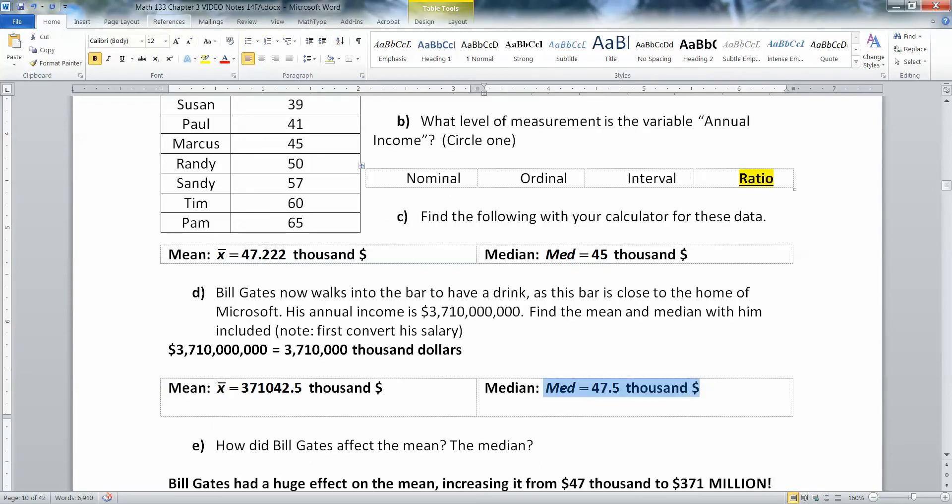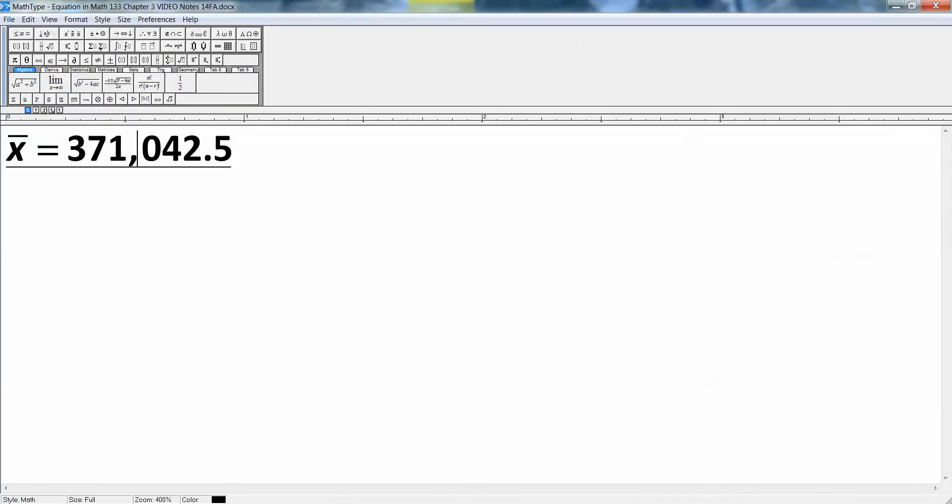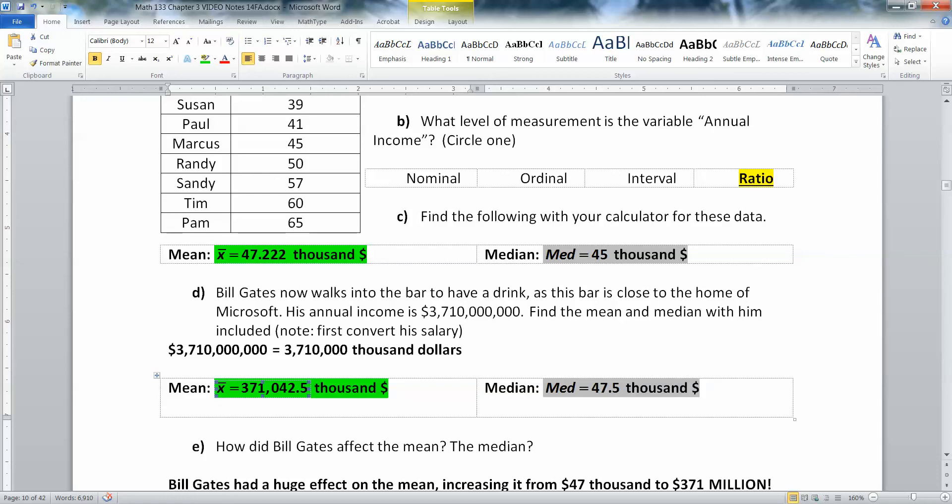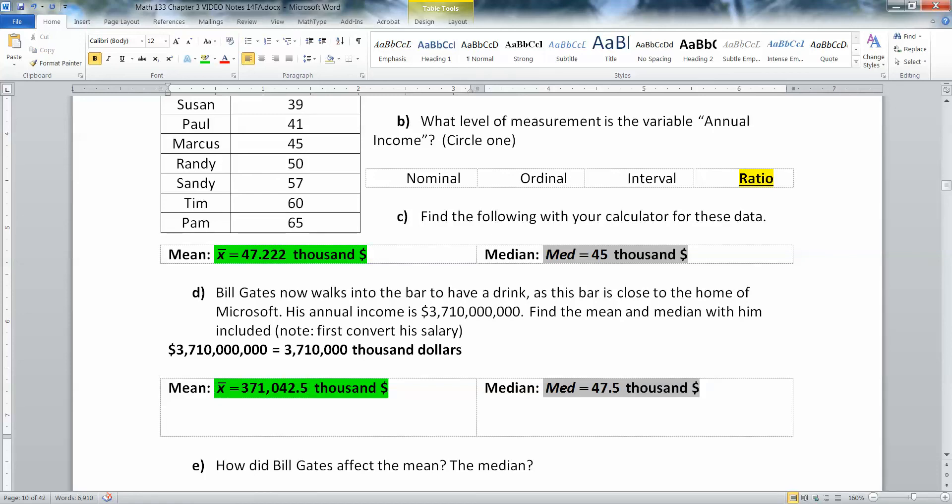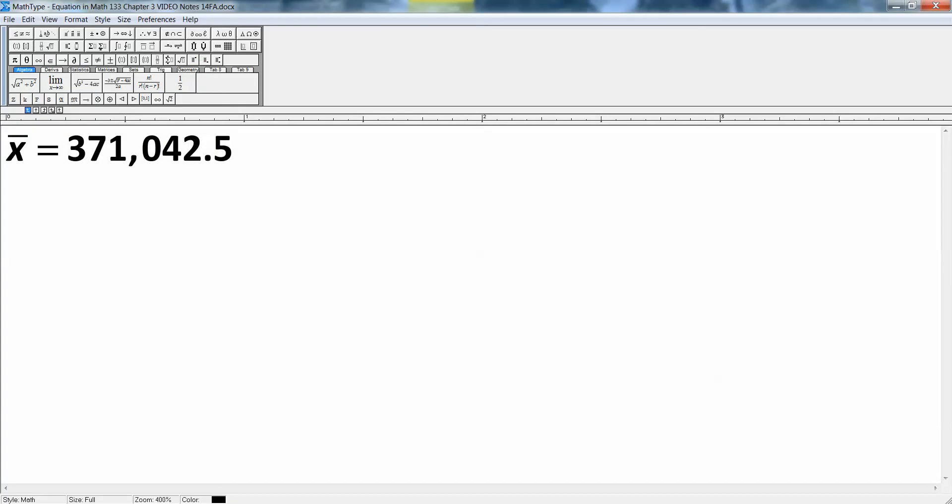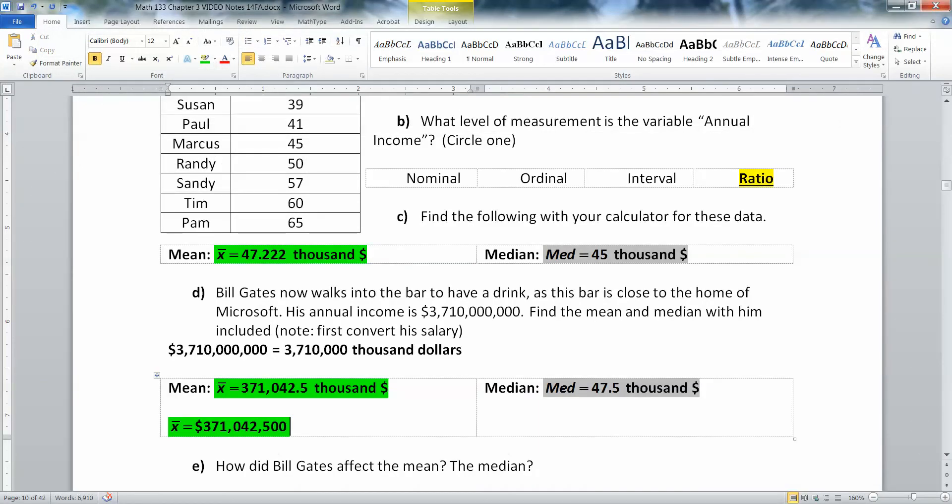Now check it out. The median went from 45,000 to 47.5 thousand. Not much change at all. The mean, on the other hand, went from a whopping 47,000 to 371,000. Because this is 371,042.5 thousand dollars. In other words, this is, if we move the decimal spot over, 371 million dollars. It's huge. Super, super huge.